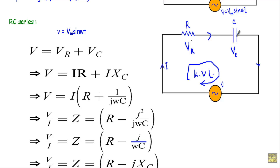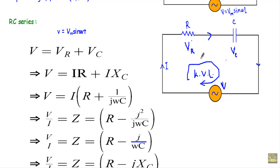Now let me show you the impedance of an RC series circuit, where resistance R and capacitance C are connected in series. Applying an alternating voltage V equals Vm sin(ωt), the RMS current is I and RMS voltage is V. Since this is a series circuit, current I is the same throughout, and voltage is divided as VR across R and VC across C. Applying KVL: V equals VR plus VC.